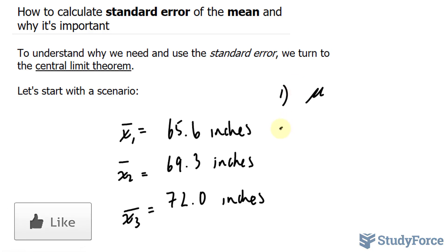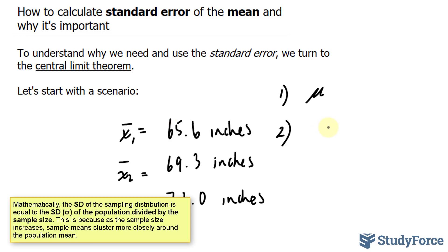And the next thing that this theorem states is that if we took the standard deviation of the means, the standard deviation of the distribution here is equal to the standard deviation of the whole population divided by the square root of the sample size.